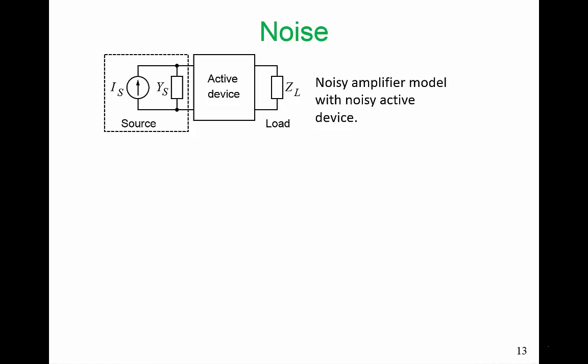The model shown at the top of the slide here is of a noisy amplifier. We have a source, which of course will produce noise itself. Then we have an active device, which adds noise, and we have a load. Both a signal and noise will be presented to the load. And the signal-to-noise ratio at the load will be less than the signal-to-noise ratio at the input because of the added noise from the active device.